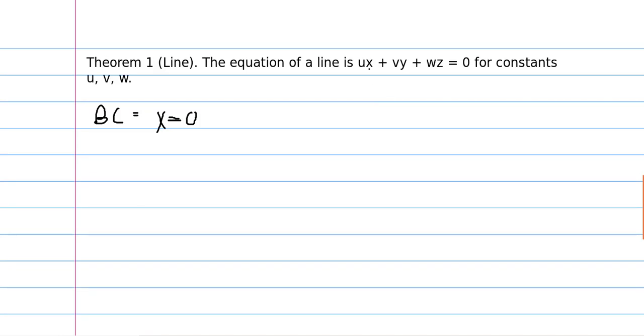So basically we can plug in our coordinates to find out more information about the constants. So if we plug in 0, 1, 0, which are the coordinates of b, then we get that v equals 0, because these terms go away and you're just left with v on the left and 0 on the right.